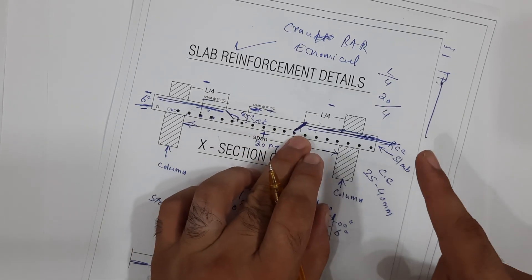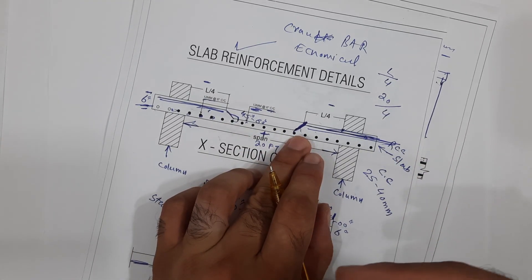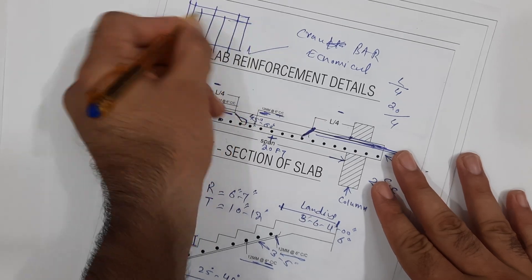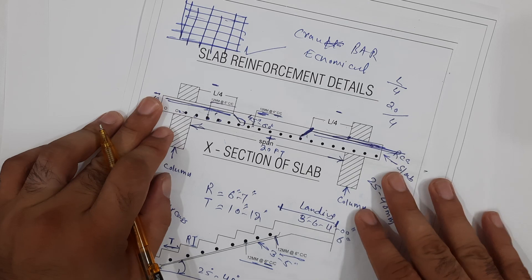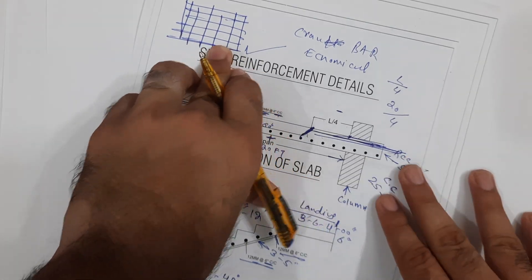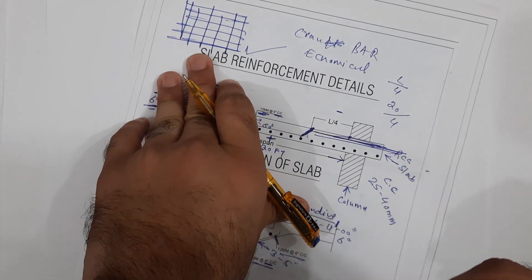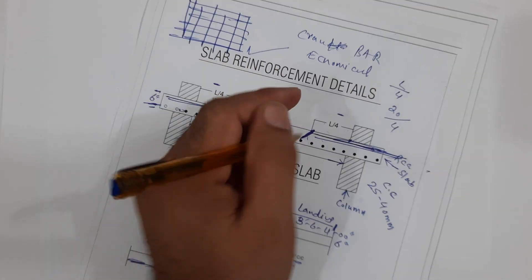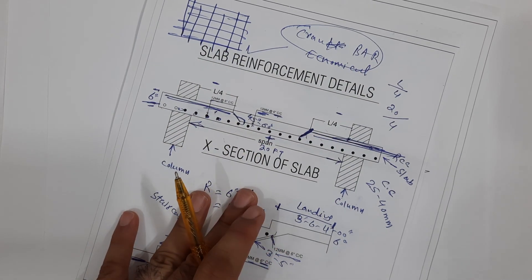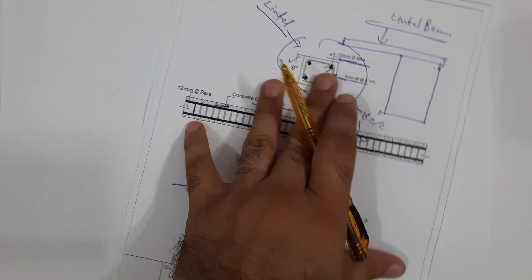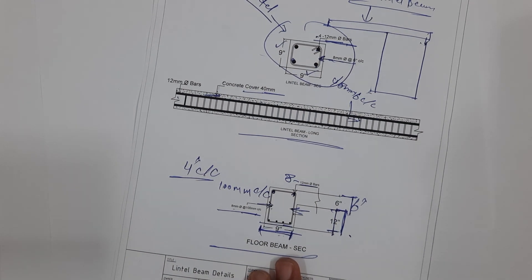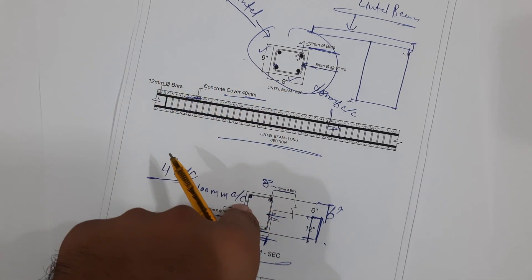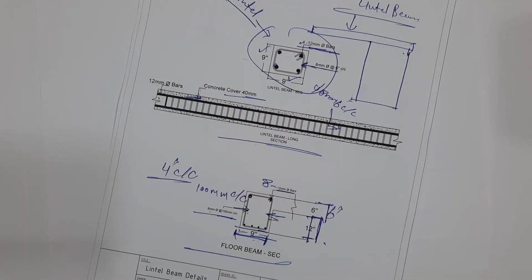Remember: extra steel rods are not economical, but the crank bar, or bent-up bar, is economical. When providing main bars and distribution bars and then adding extra steel rods in the RCC slab at L/4 distance, it costs more. During crank bar placement, we don't require any extra steel rods. Therefore, I suggest providing the crank bar or bent-up bar in the RCC slab. This covers the staircase, lintel beam, and floor beam. Hope this short video helps you understand how to read structural drawings. Thanks for watching — see you in the next video, goodbye.